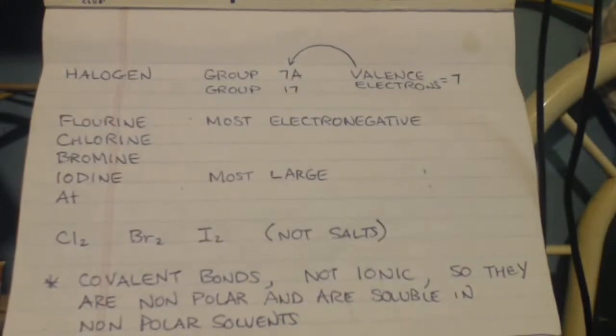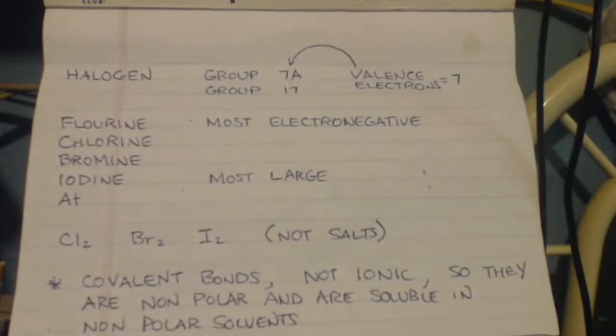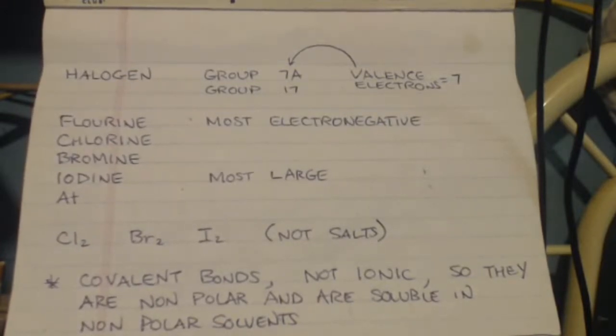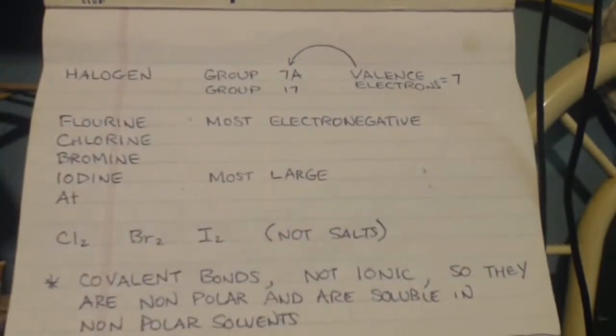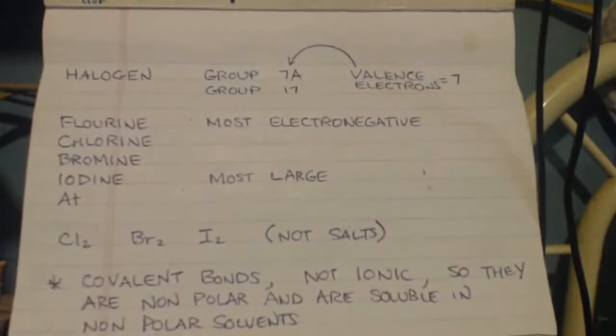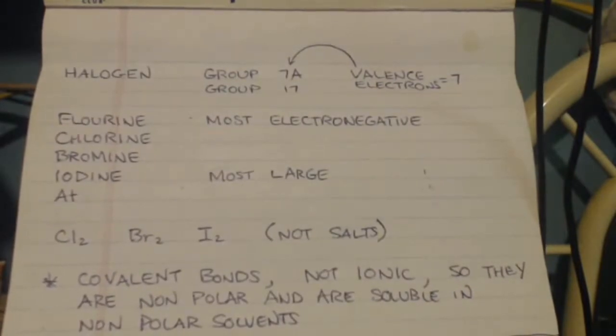Just a little bit of nomenclature about oxyacids. First I want to go into halogens. Halogens are your group 7, I guess nowadays they call it group 17.